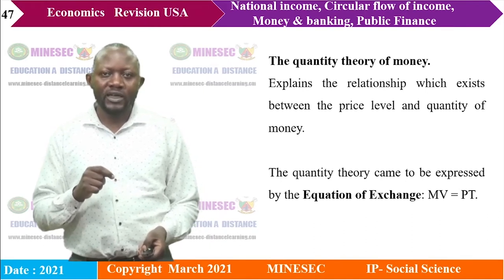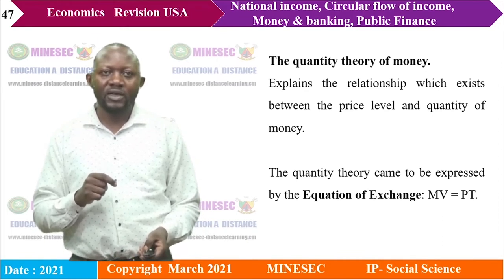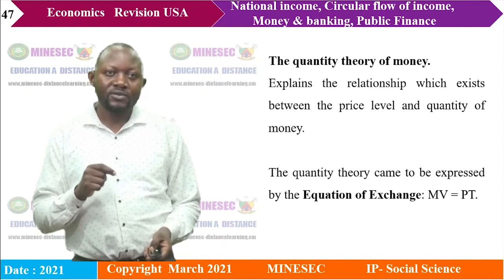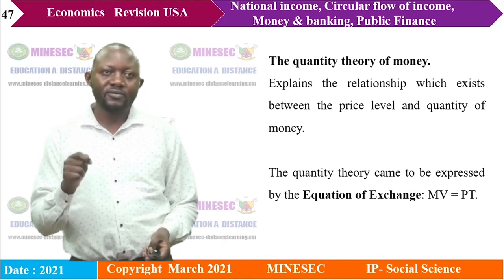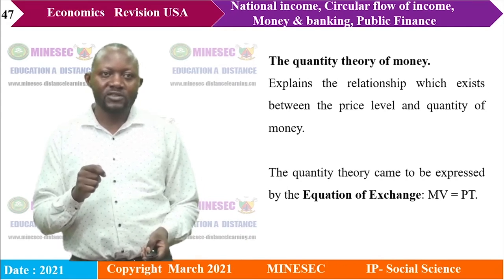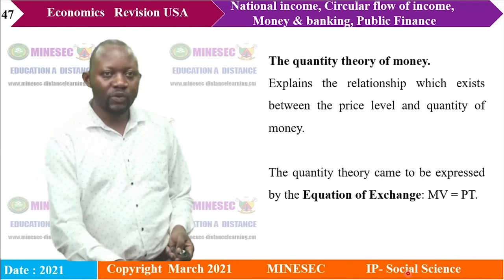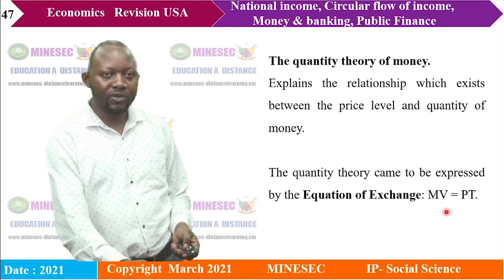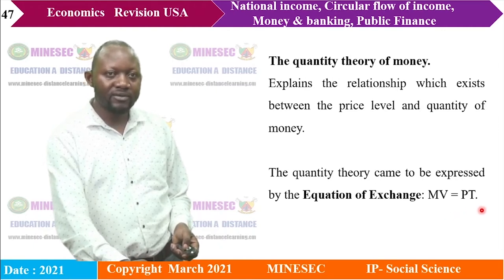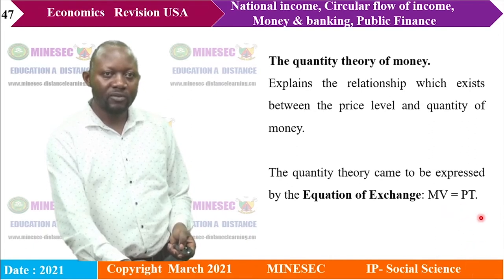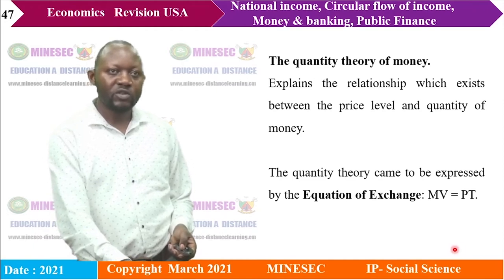The quantity theory of money explains the relationship between the price level and the quantity of money — a direct relationship: as quantity of money increases, price level also increases. This is expressed by the equation of exchange: MV = PT, where M is the quantity of money, V is the velocity of circulation, P is the price level, and T is the volume of transactions. This was put forward by Irving Fisher.